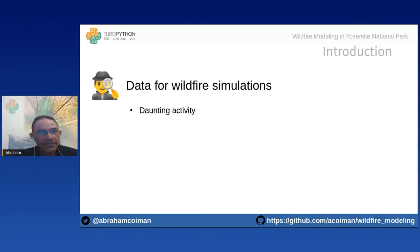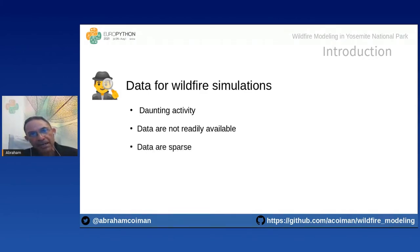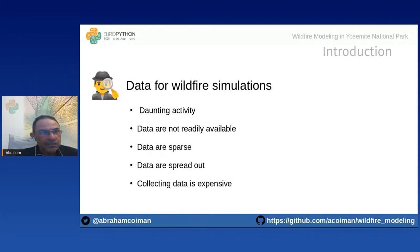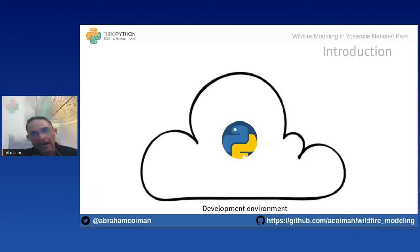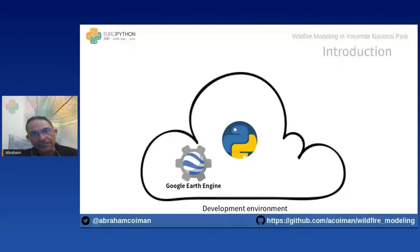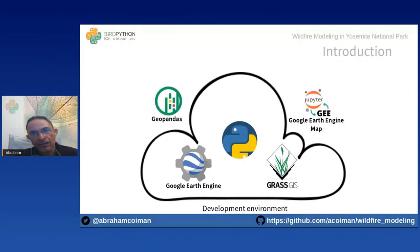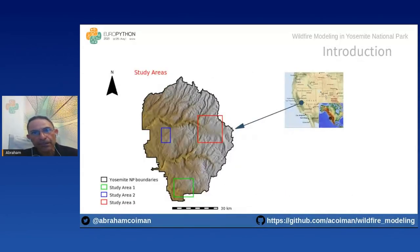Getting data for wildfire simulation can be a daunting activity because data are not readily or publicly available, sometimes sparse or spread across multiple sources, and collecting our own data can be very expensive. In this talk I present an approach to readily gather and analyze data for wildfire modeling purposes. Our development environment is mainly based on Python and combines Google Earth Engine, GeoPandas, geemap, and GRASS GIS — all within a Jupyter notebook.